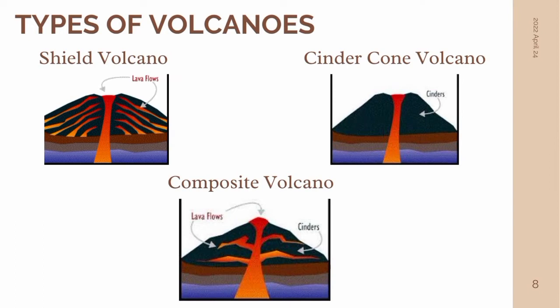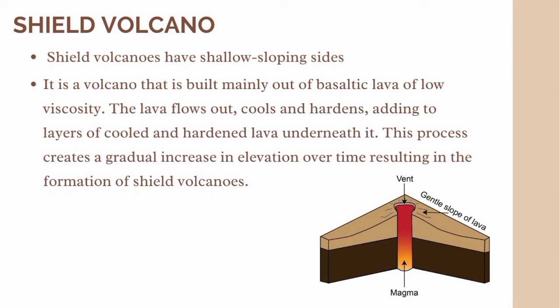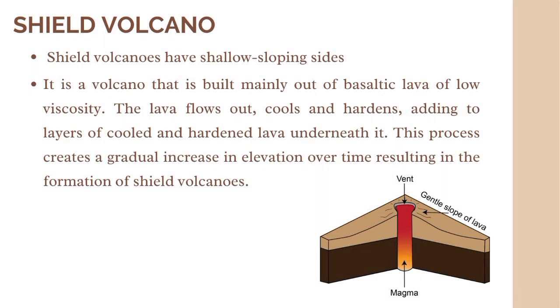Let's move on to the types of volcanoes. We have the shield volcano, cinder cone volcano, and composite volcano. A shield volcano is a type of volcano that looks like a shield when viewed from above. The world's tallest active volcano, Mauna Kea in Hawaii, is a shield volcano. Shield volcanoes are built slowly from low-viscosity lava that spreads far and quickly. The lava eventually dries to form a thin, wide sheet, and after repeated eruptions, a mound starts to form. They have gentle slopes and are the largest volcanoes in the world.